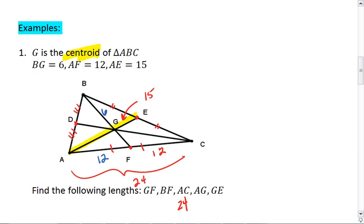We also know, looking at this yellow median, that if the whole length is 15, if we divide 15 into 3 parts, so 15 divided by 3 is 5, then 2 of those parts is the length of AG. So AG is 10, and the other part is GE, and that's 5. So GE is 5, AG is 10.